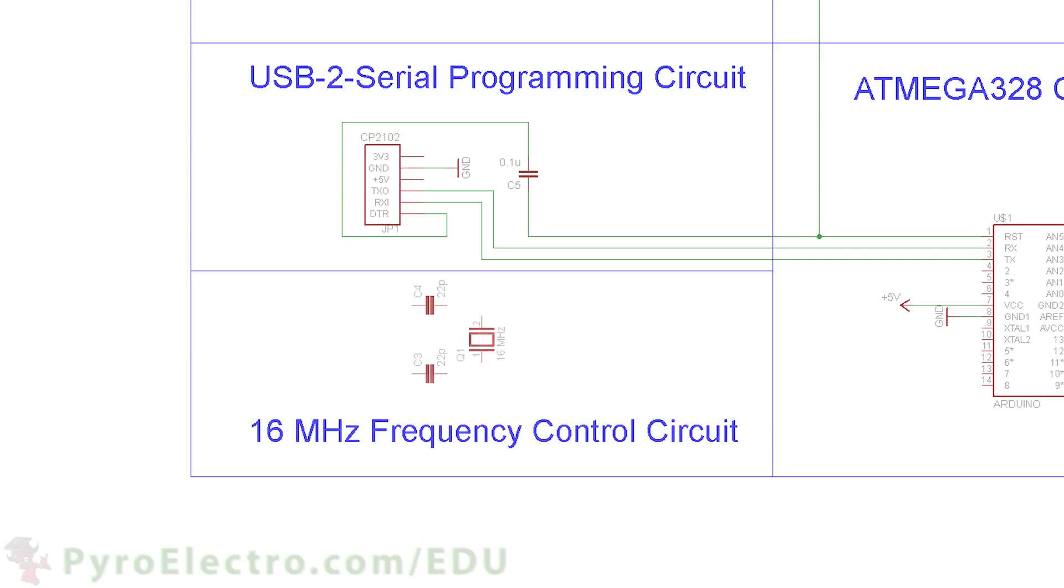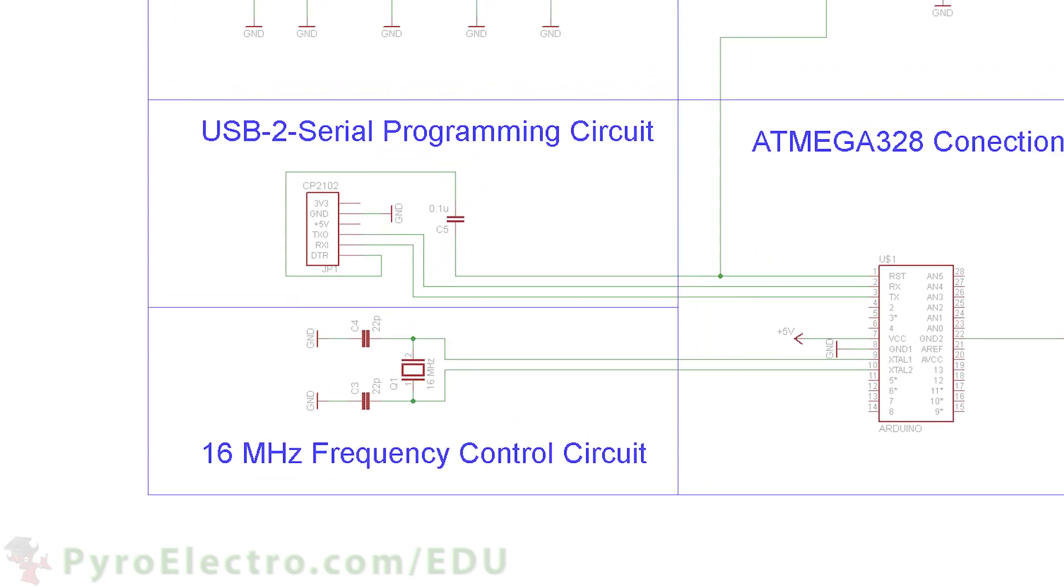The frequency control circuit consists of the 16 MHz crystal and two 22 pF capacitors. The crystal connects to pins X1 and X2 of the microcontroller.